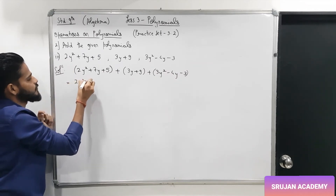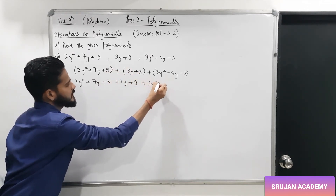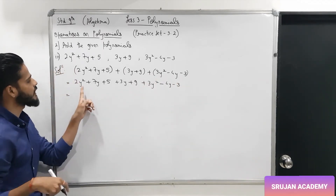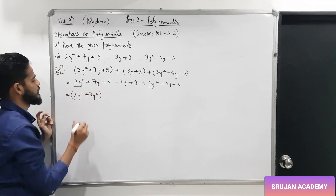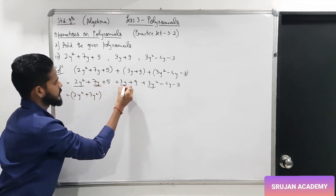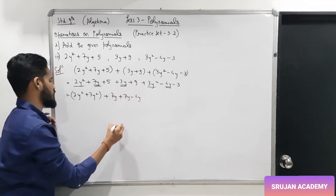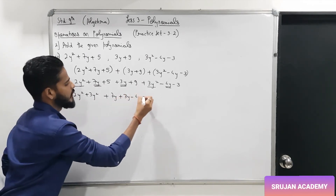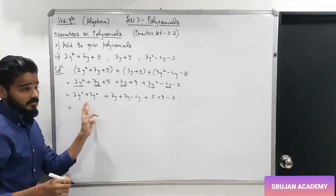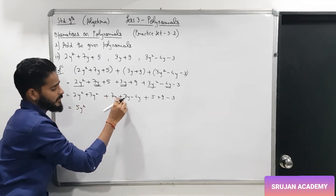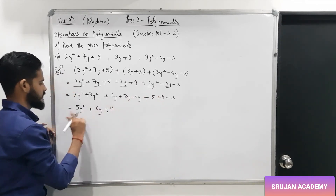Collect like terms. The m² terms: 2m² + 3m² = 5m². The m terms: 7m + 3m − 4m = 6m. The constant terms: 5 + 9 − 3 = 11. So the final answer is 5m² + 6m + 11.